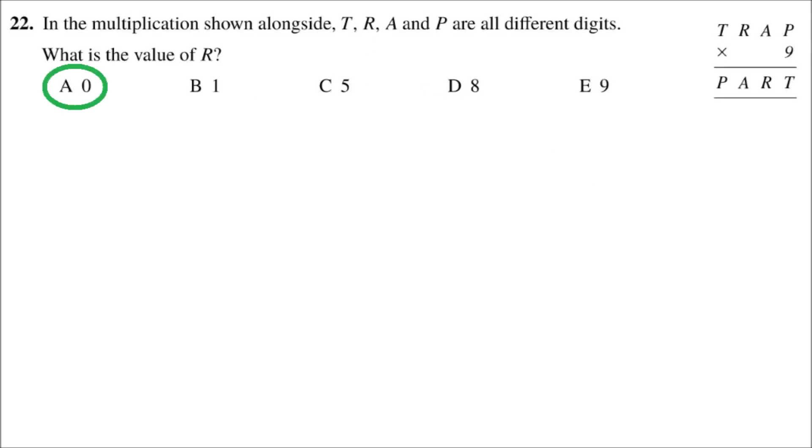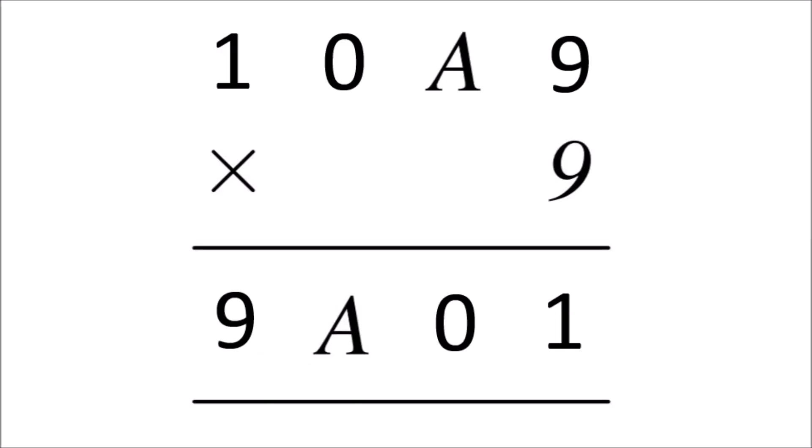This gives us our answer as R equaling zero. But if we wanted to check it, then A must be eight more than R, and so the number T, R, A, P is 1089. And 1089 multiplied by nine gives 9801, which is the reverse.